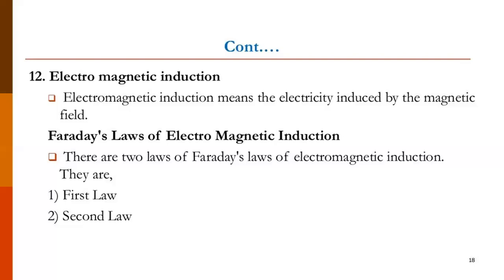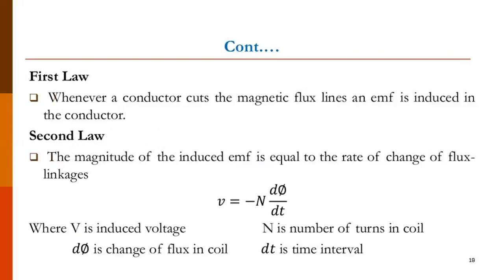Faraday stated two basic laws of electromagnetic induction: Faraday's first law and Faraday's second law. According to Faraday's first law, whenever the number of magnetic lines of force — that is, flux linking with a coil or a circuit — changes, an EMF gets induced in that coil or circuit. So whenever a conductor cuts the magnetic flux lines, an EMF is induced in the conductor. This is the first law.